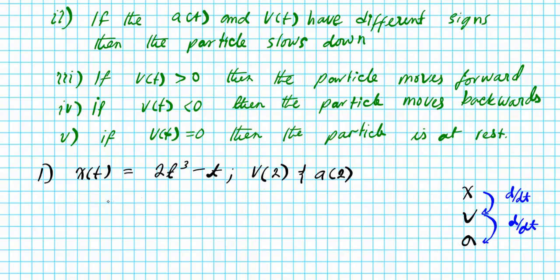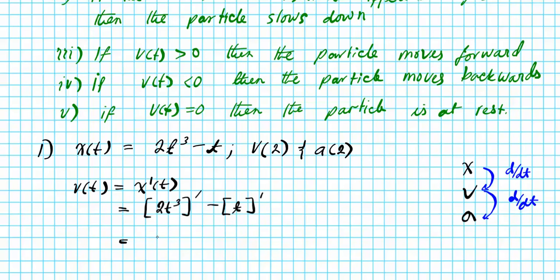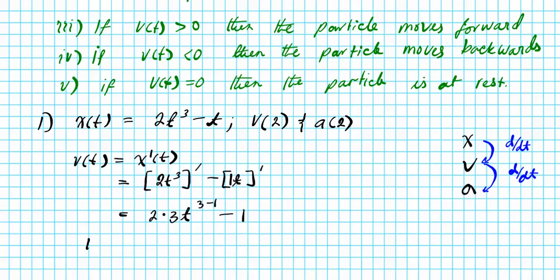To find v(t), we have to find the derivative. Remember, do your calculus first before you evaluate with arithmetic. v(t) equals the derivative of x(t). We're going to do term-by-term differentiation: (2t³ − t)′. Using the power rule on 2t³, we get 2 times 3, power down, giving 2·3·t^(3−1), and the derivative of t is just 1. So the velocity function simplifies to v(t) = 6t² − 1.